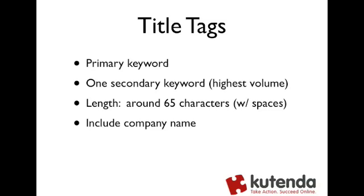So what are the rules for title tags? Number one, we're going to want to use our primary keyword in there, and then select one of your secondary keywords. A lot of times you're going to want to use your highest volume keyword and use that in your title tag as well. Lengthwise, you're going to do it around 65 characters, and that's including spaces. That's about how much space you're going to get in that blue clickable text in the search results. It can be longer — if you have longer keywords it's going to have to be longer, and that's fine. Just know that 65 is a good guideline to aim for.